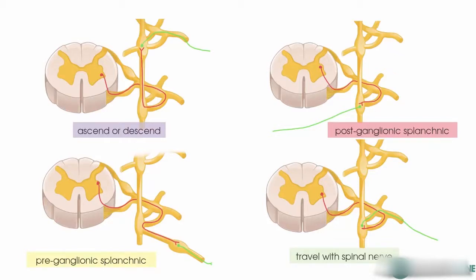I'd like to take a look at examples of these different paths that the sympathetic fibres can take in the body.